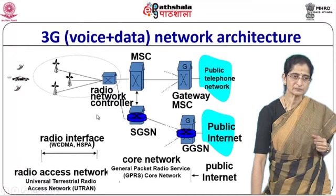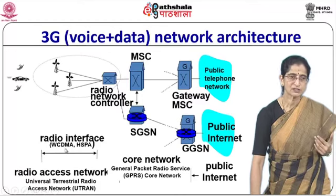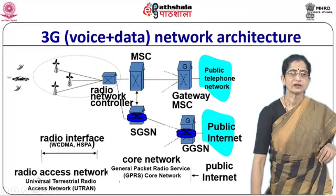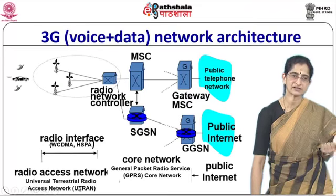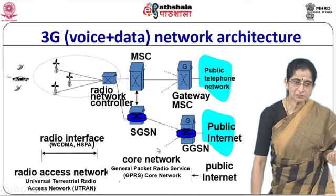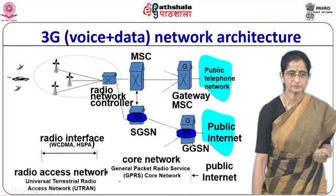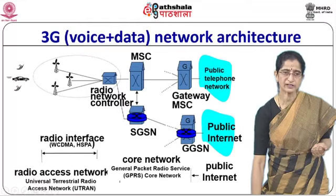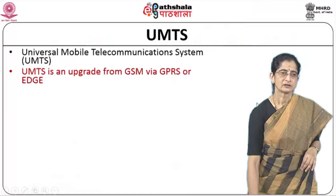Between the radio network controller and the base stations, we have a radio interface. This radio interface could be either WCDMA or HSPA, referred to as a Universal Terrestrial Radio Access Network or UTRAN in the case of UMTS. The part that handles GPRS — General Packet Radio Service — is referred to as the core network, which connects to the public internet. This is the overall structure we have.